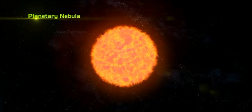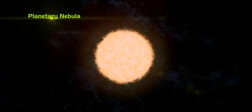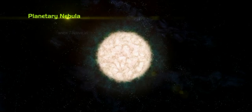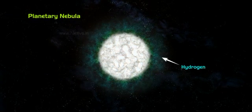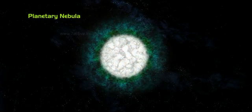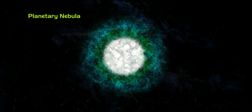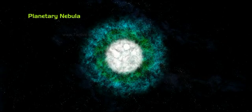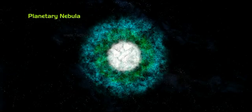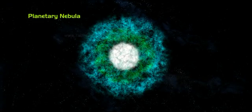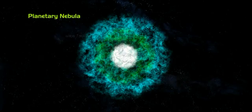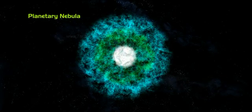A planetary nebula consists of a rapidly expanding shell of glowing gas, mostly hydrogen, ejected from a red giant upon its collapse into a white dwarf. Ultraviolet radiation from the hot, luminous white dwarf ionizes the expanding gas and causes it to glow.